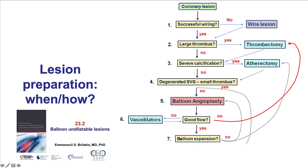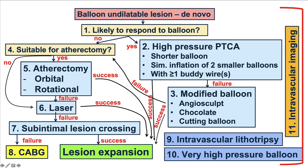If there is good flow, the next factor to consider is whether there is good balloon expansion. It is best to predilate the target coronary lesion with a balloon sized one-to-one to the target vessel. If expansion is inadequate, additional treatment should be done to ensure the lesion expands. Otherwise, the stent will be underexpanded, predisposing to stent thrombosis. It is much harder to expand an underexpanded stent than to treat a de novo lesion; for example, atherectomy is much safer in a de novo versus an in-stent lesion. This will be discussed in detail in video 23.2, which covers algorithms for treating balloon undilatable lesions.